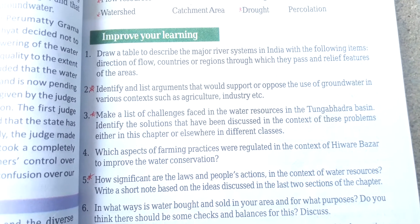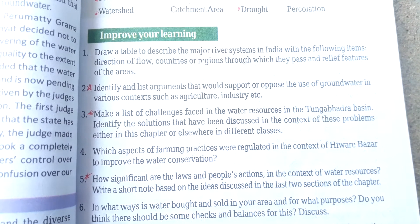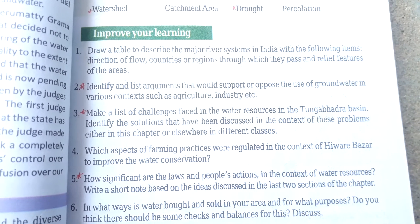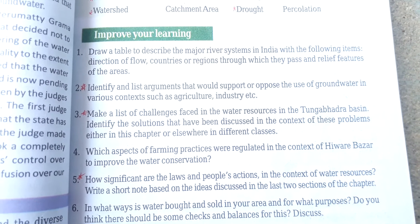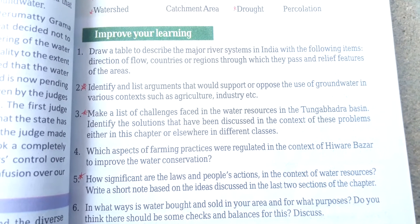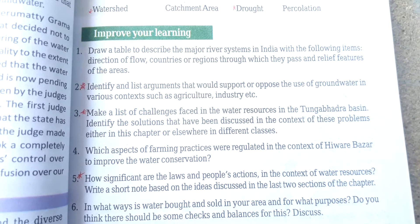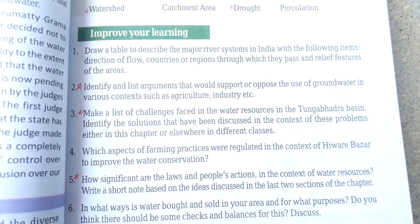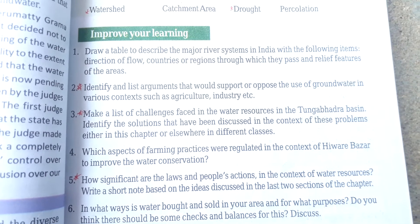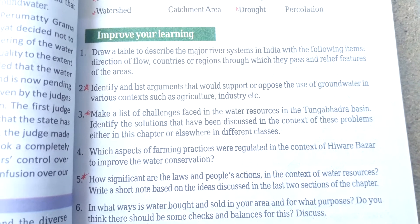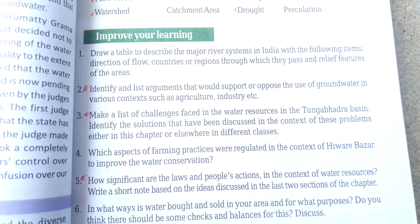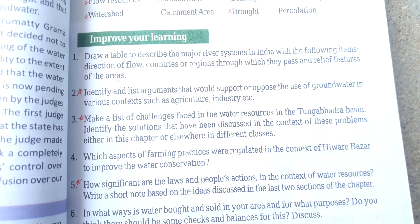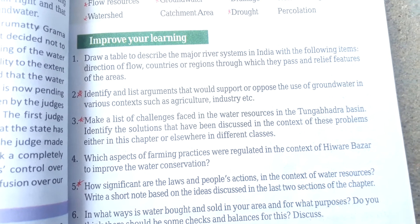Third question: Make a list of challenges faced in the water resources of the Tungabhadra basin. Identify the solutions that have been discussed in the context of these problems, either in this chapter or elsewhere in different classes.